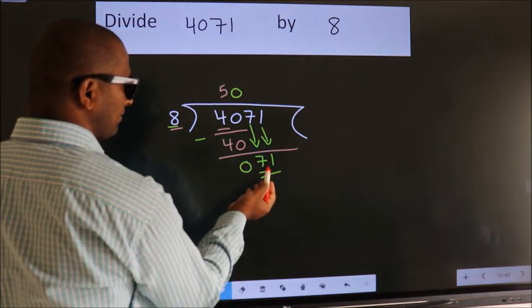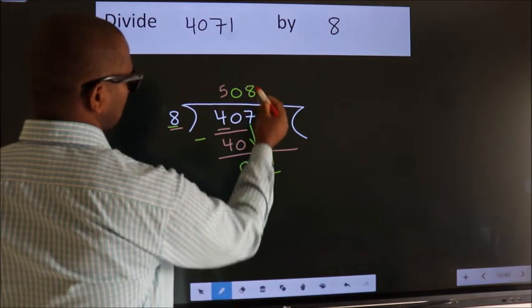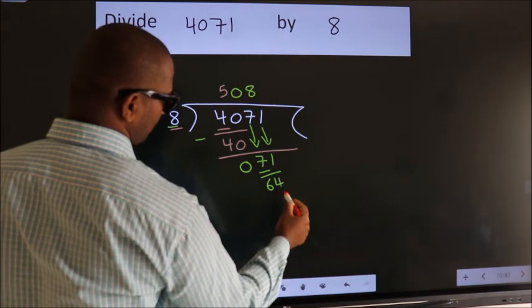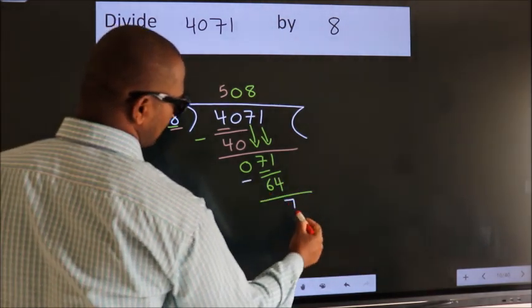A number close to 71 in 8 table is 8 eights, 64. Now we subtract. We get 7.